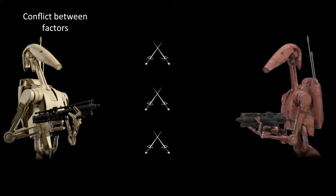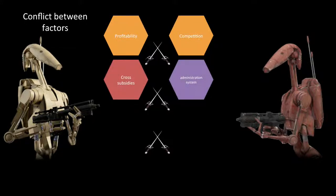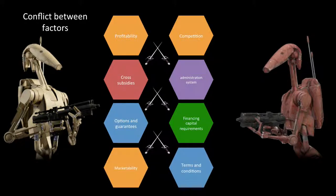Finally, let's look at some conflicts between factors. Profitability and competition conflict: the higher you want your profits, the less competitive you will be — unless it is a highly complicated product. Cross subsidies and administration systems: the more you cross-subsidize, the more complicated the administration system becomes. Options and guarantees are great for increasing marketability but they have financial capital requirements due to the probability that policyholders exercise them. Marketability and terms and conditions also conflict: marketing may want to make great claims, but the lawyers may clamp down on that in the terms and conditions.